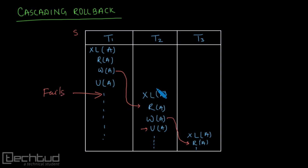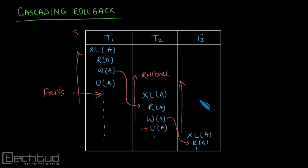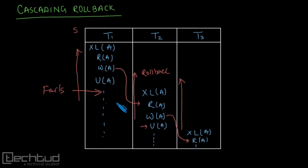Now if transaction T1 fails, then since T2 has read data written by T1, T2 has to roll back. And since T3 has read data written by T2, T3 also has to roll back. The rollback is cascaded across all transactions — this is cascading rollback in basic two-phase locking.